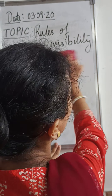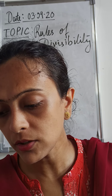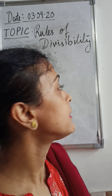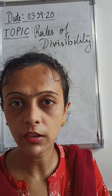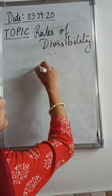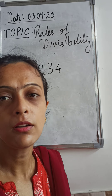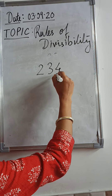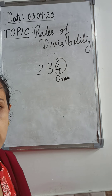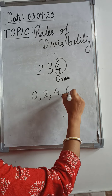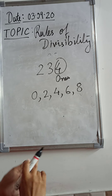The first rule is for divisibility by 2. The ones digit of the given number must be 0, 2, 4, 6, or 8. We know every number has a ones place, so you need to check the ones place. For example, the number 234 — the ones place digit is 4.